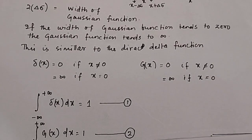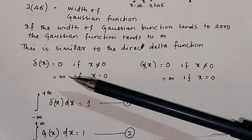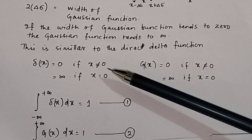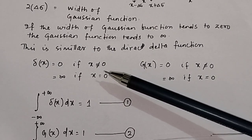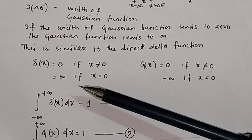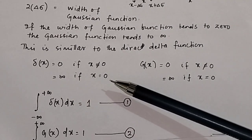This is similar to the Dirac delta function. In the Dirac delta function, delta(x) equals 0 if x is not equal to 0, and equals infinity if x equals 0.